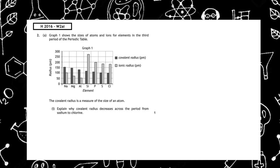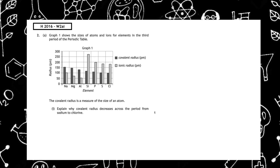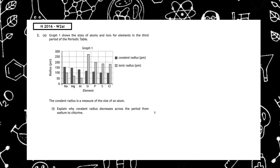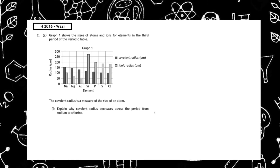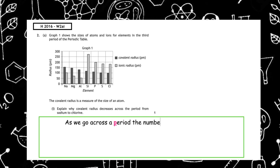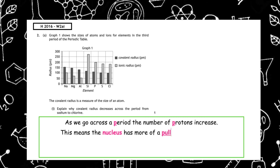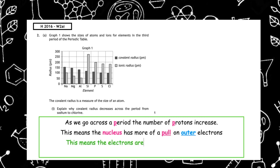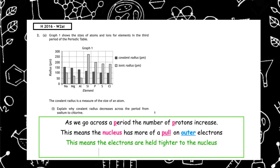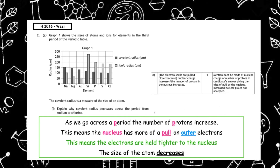This question is from the Higher 2016 paper, written question 2a part one: 'Explain why covalent radius decreases across the period from sodium to chlorine.' As we go across a period, the number of protons increases. This means the nucleus has more of a pull on the outer electrons, the electrons are held tighter to the nucleus, and therefore the size of the atom decreases.